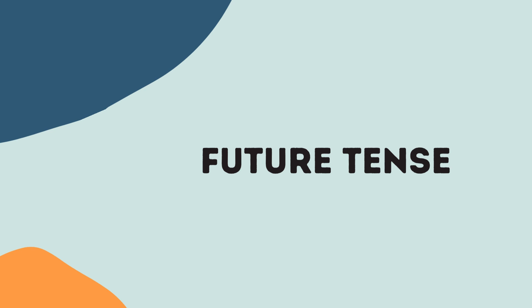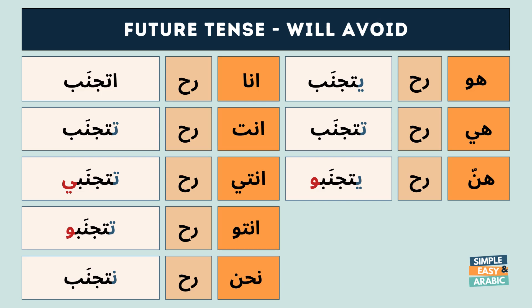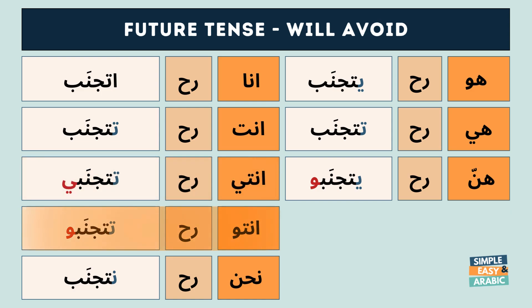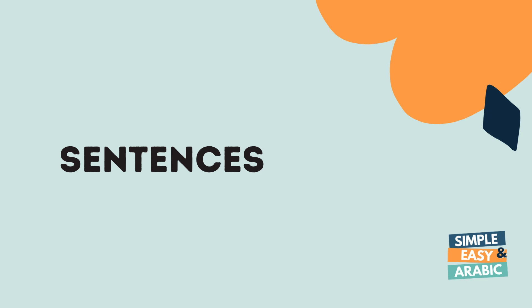The future tense. أنا رح أتجنب. أنت رح تتجنب. أنتي رح تتجنبي. أنتو رح تتجنبو. نحن رح نتجنب. هو رح يتجنب. هي رح تتجنب. هنن رح يتجنبو. Let's have a look at the sentences.